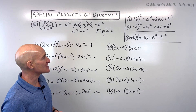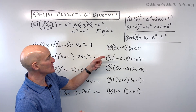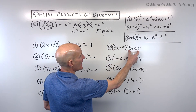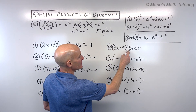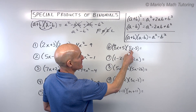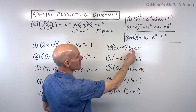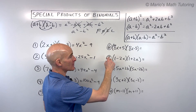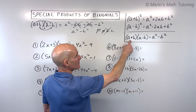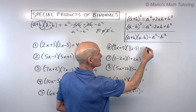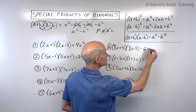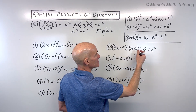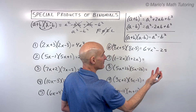Number six: I recognize the sum and difference pattern — 8x and 5, 8x and 5, plus in one and minus in the other. First times first: 64x squared. Last times last: negative 25.